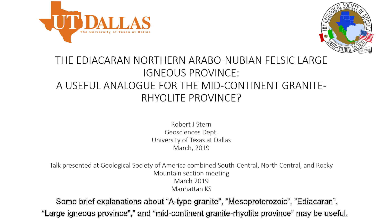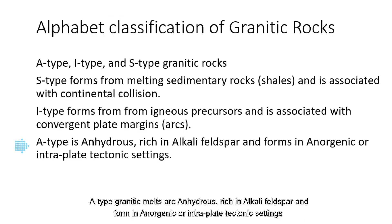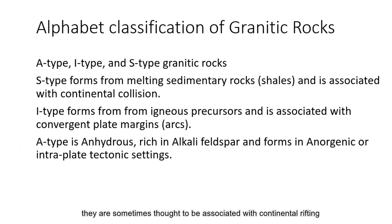Some brief explanations about A-type granite, Mesoproterozoic, Ediacaran, and Large Igneous Province may be useful. A-type granitic melts are anhydrous, rich in alkali feldspar, and form in anorogenic or intraplate tectonic settings. They are sometimes thought to be associated with continental rifting.